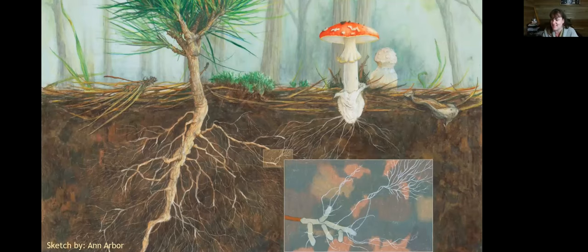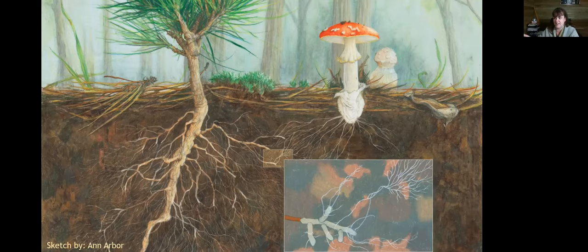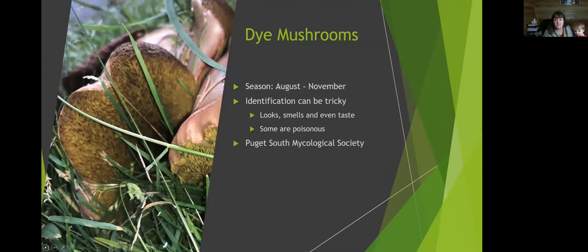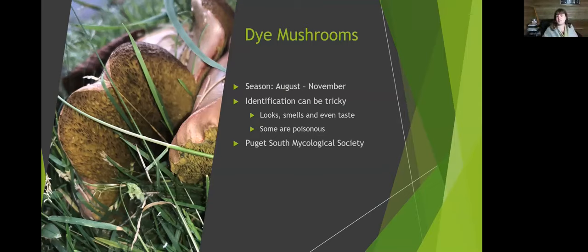Fungi are really actively managing the forest. Another fascinating finding is that if a tree gets injured, it can send danger signals throughout the mycorrhizal fungi highway. Dye mushroom season runs August to November — we're right in the middle of it. Identification of mushrooms can be very tricky; it's not just what something looks like but what it smells like, tastes like, and what it's growing on — Douglas fir versus birch can help with identification.